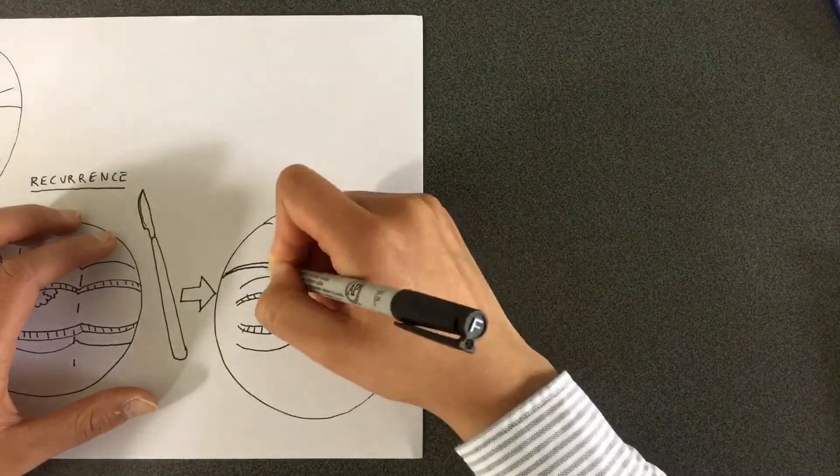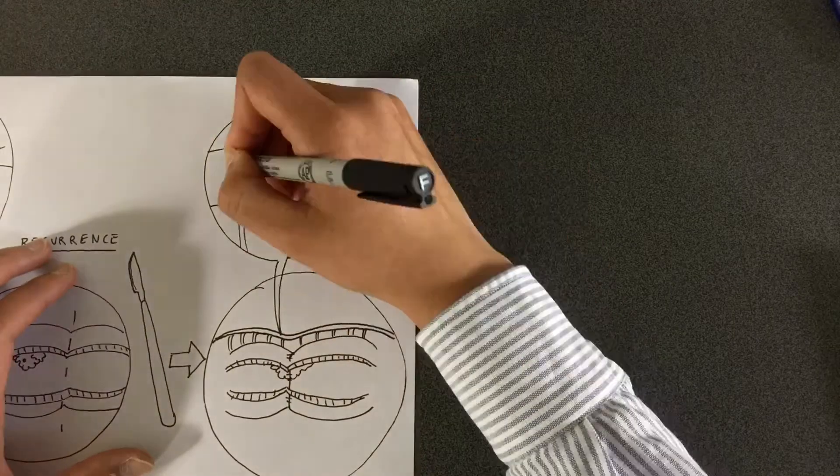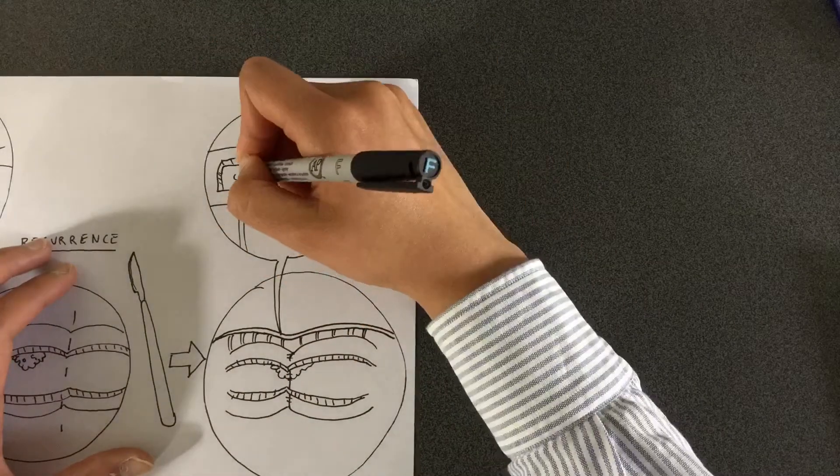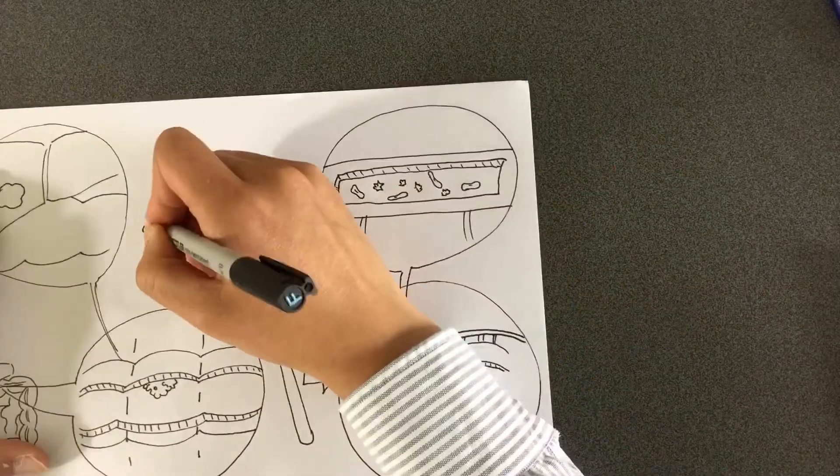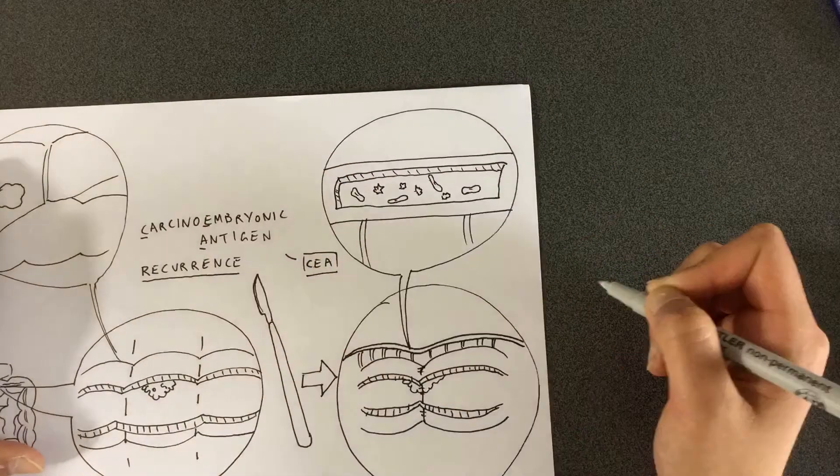These recurrences can make a protein marker that goes into the blood vessels around the colon and then into the blood circulation. The protein is called carcinoembryonic antigen or CEA.